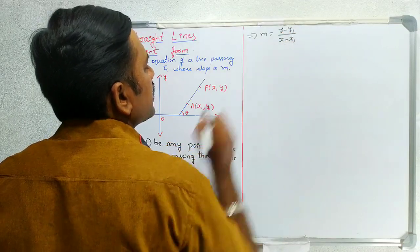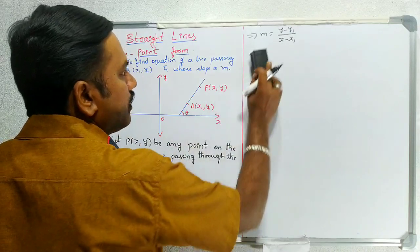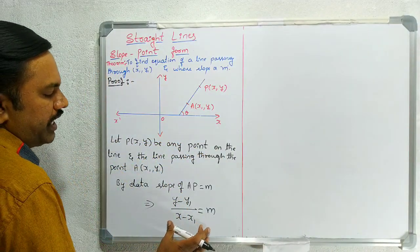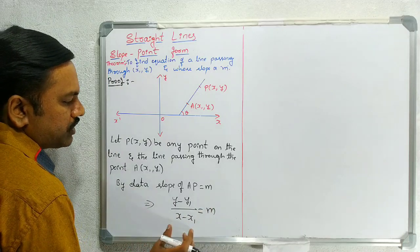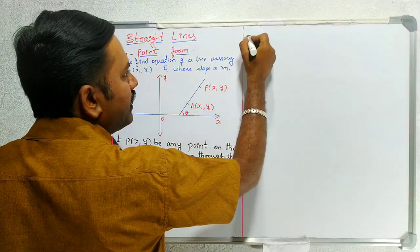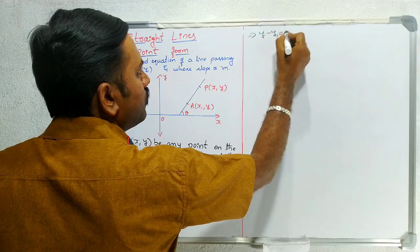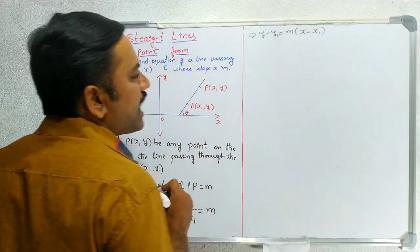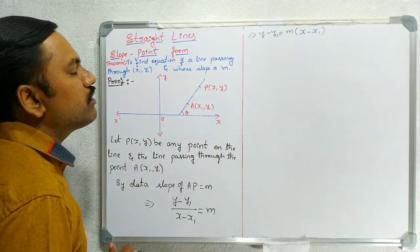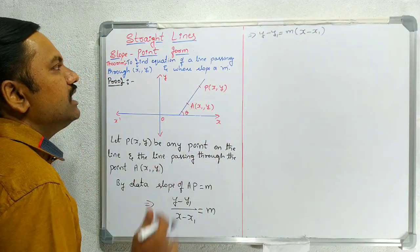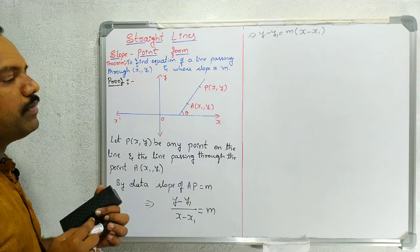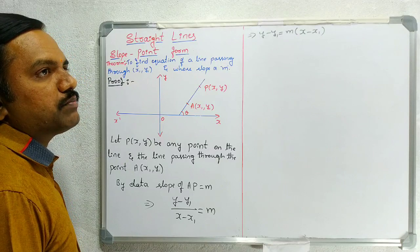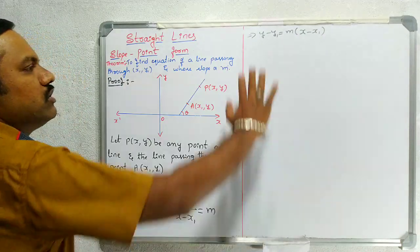By cross multiplication: y − y1 = m(x − x1). That is the answer. That is the equation of the line in slope-point form. So the slope-point form is: y − y1 = m(x − x1). That is the required equation of the line.